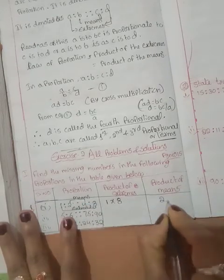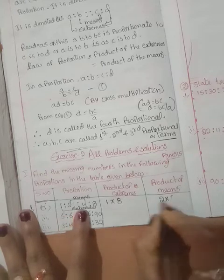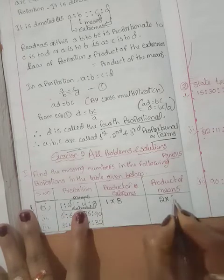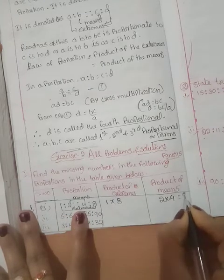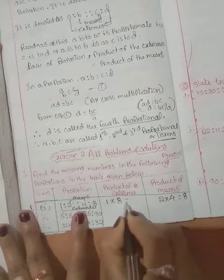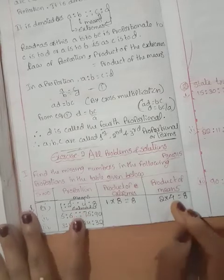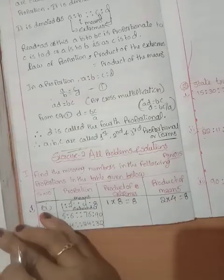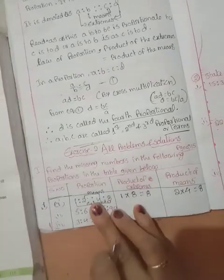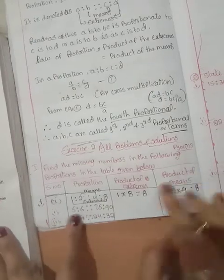Extremes means 1 cross 8 — first term and fourth term. And product of the means: 2 cross 4, equal to 8. This is also 8. Both are equal. So that's why it is a proportion. First one is the proportion.